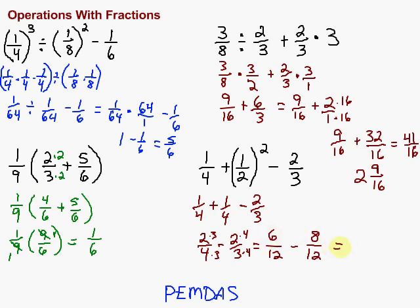Now I've got a common denominator of twelve. So I can go ahead and subtract across the top. Six minus eight is negative two over twelve. And simplify that. I can divide by two on the top and the bottom. Negative two divided by two is negative one. And twelve divided by two is six. So there's our answer.